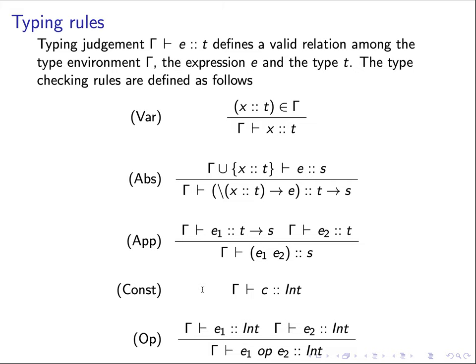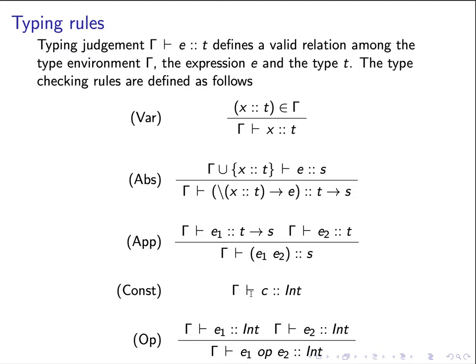The fourth rule handles the constant, which is trivial, because we know that all the constants will have their primitive type. In this case, we assume that the constant c is an integer, so we have type integer. The last rule handles the infix operator. In this case, we assume that both operands will have the same type, which is integer.